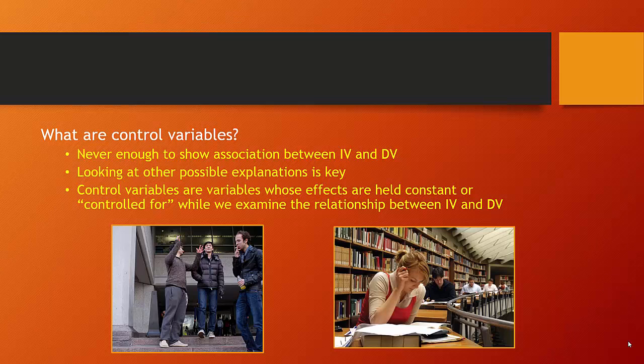Let's get started. Testing a hypothesis involves showing that the independent and dependent variable vary together, or co-vary, in a consistent patterned way. For example, showing that people who have higher levels of education do tend to have higher levels of political interest. But it's never enough to demonstrate an empirical association between the independent and dependent variable. We must always go on to look for other variables that might plausibly alter or even eliminate the observed relationship. Control variables are variables whose effects are held constant, or literally controlled for, while we examine the relationship between the independent and dependent variable.